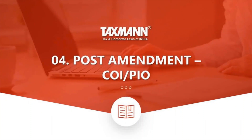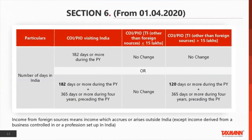Having understood the pre-amended law, let us now see what amendments Finance Act 2020 has made. There are three sets of amendments. The first is with respect to citizens of India and persons of Indian origin. The second is with respect to deemed residency. The third is with respect to Resident but Not Ordinarily Resident. There is no change in the first condition — 182 days or more remains. The second condition for citizens of India and persons of Indian origin has changed: the relaxation is curtailed from 182 days down to 120 days.